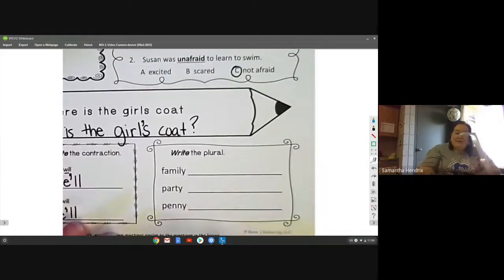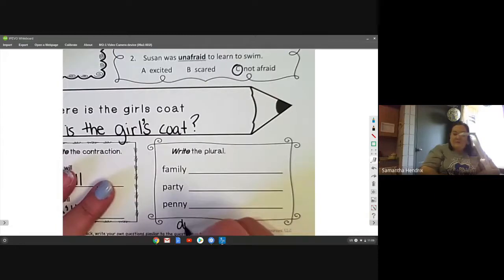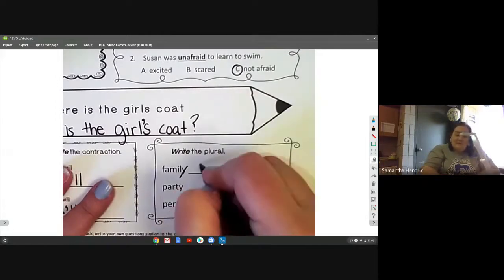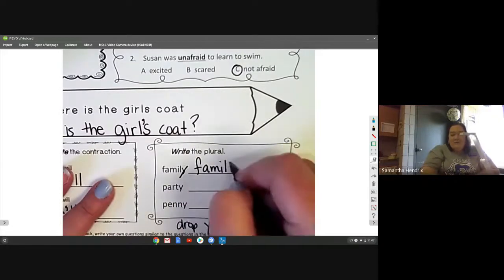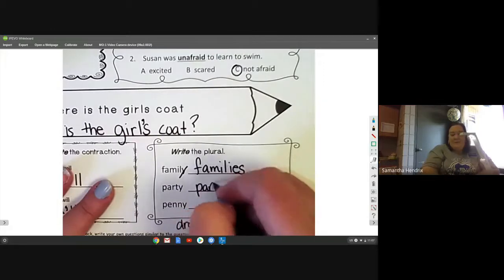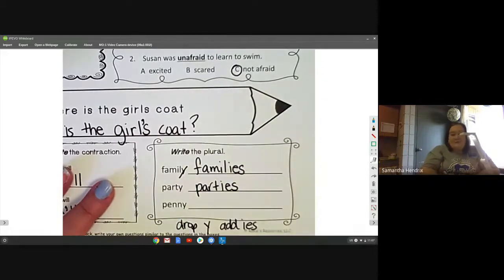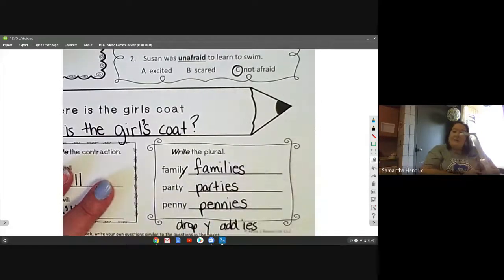Today we have family, party, and penny. Remember our rule: drop the Y, add I-E-S. So family becomes families, party becomes parties, penny becomes pennies.